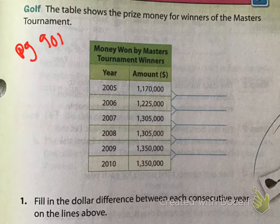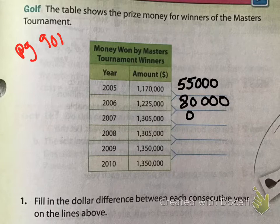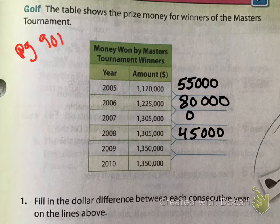Pause now and fill in the differences. Between 2005 and 2006 the difference is $55,000. Between 2006 and 2007 it's $80,000. 2007 and 2008 is a zero dollar difference. 2008 to 2009 is a $45,000 difference, and 2009 to 2010 is also a zero dollar difference.